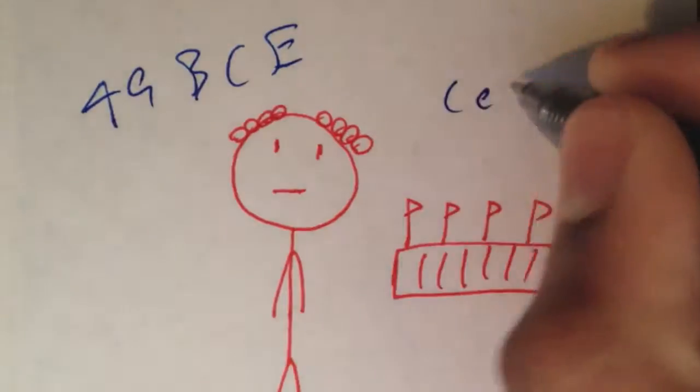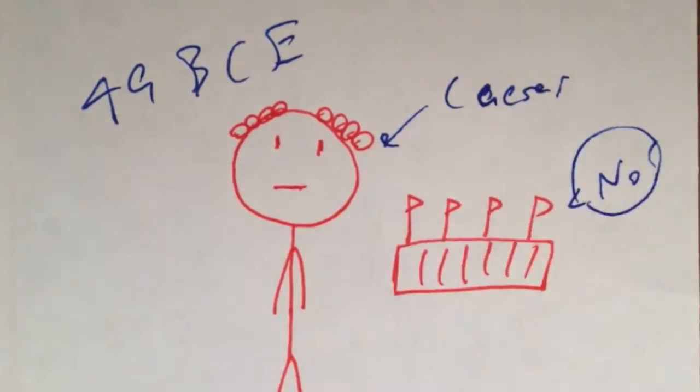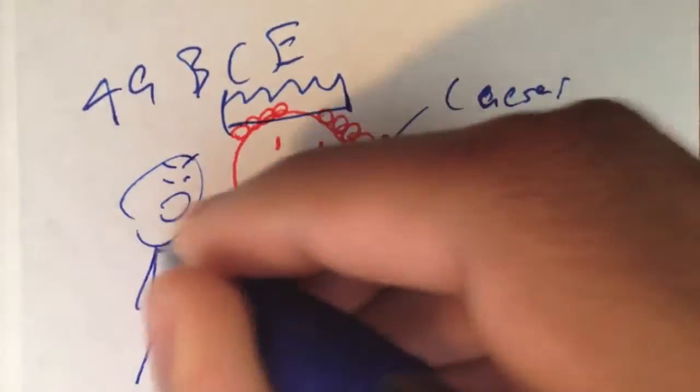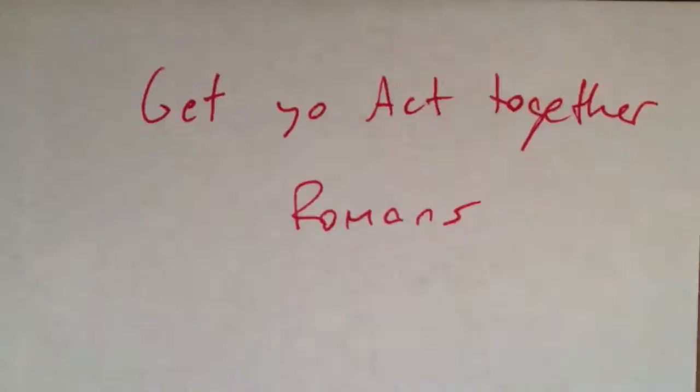Sometime after, in 49 BCE, this guy Julius Caesar conquered Rome and declared himself a dictator, though he was brutally killed by his trusty senate. Get your act together, Romans.